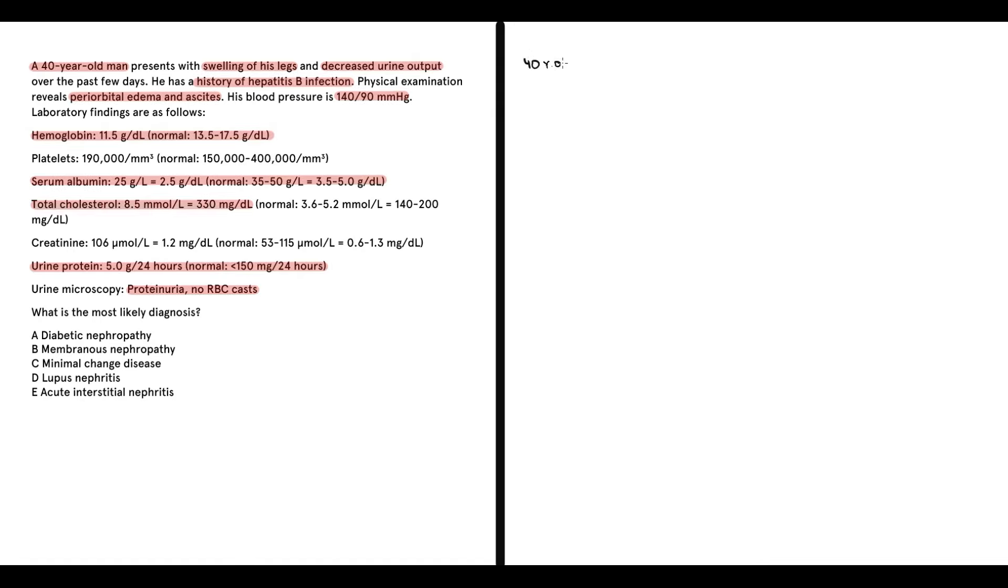So, it's a 40-year-old man. His first complaint is swelling of both legs, which is basically edema. And we know that edema develops due to increasing hydrostatic pressure or decreasing oncotic pressure. He also has decreased urine output, we call this state oliguria. From anamnesis, we know that he has a history of hepatitis B infection. In addition to this, on physical examination, he has periorbital edema and ascites. And we know that both of them develop due to increasing hydrostatic pressure or decreasing oncotic pressure.